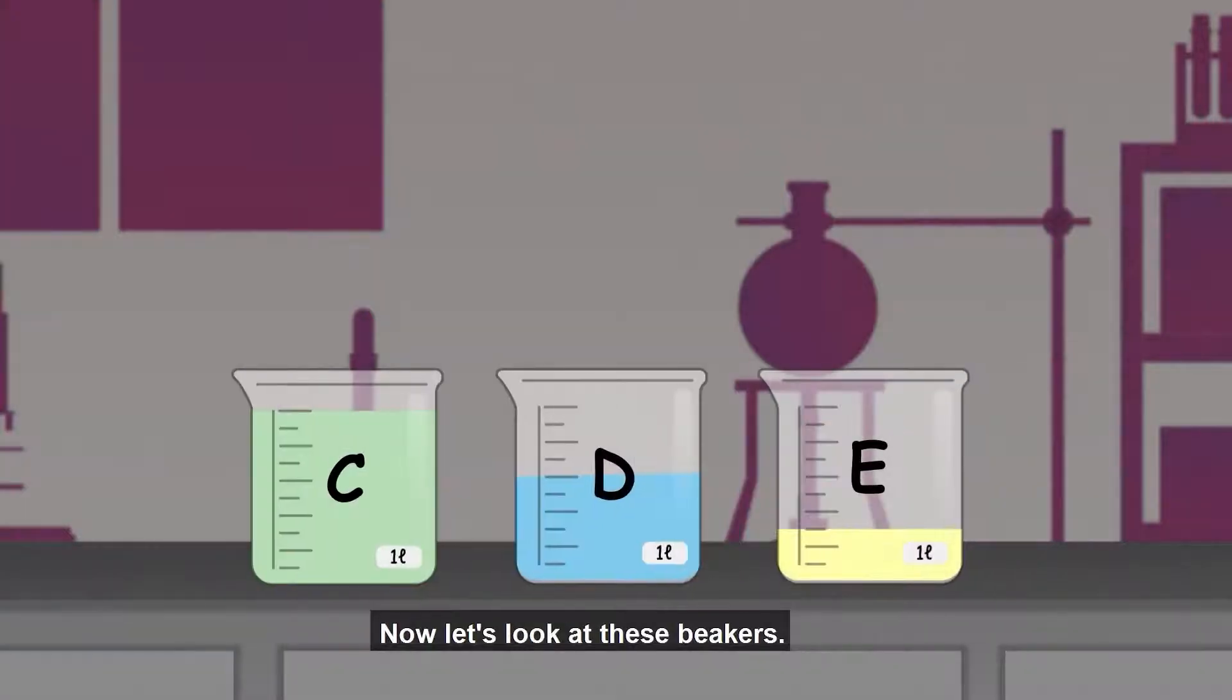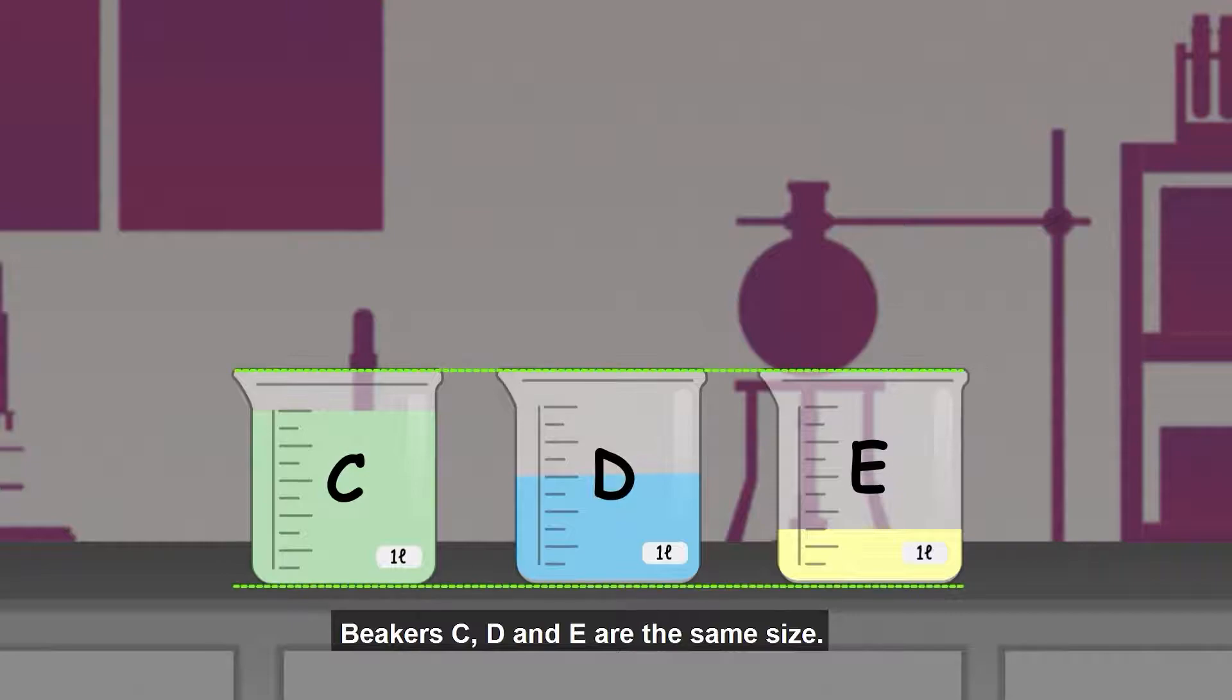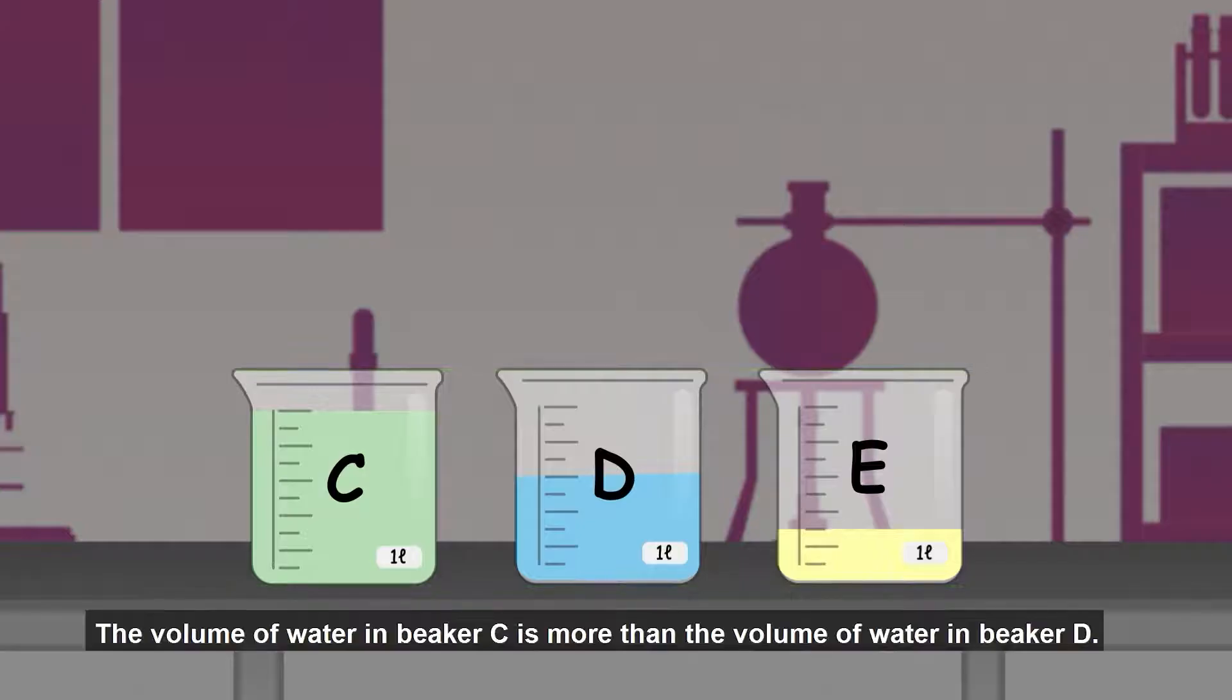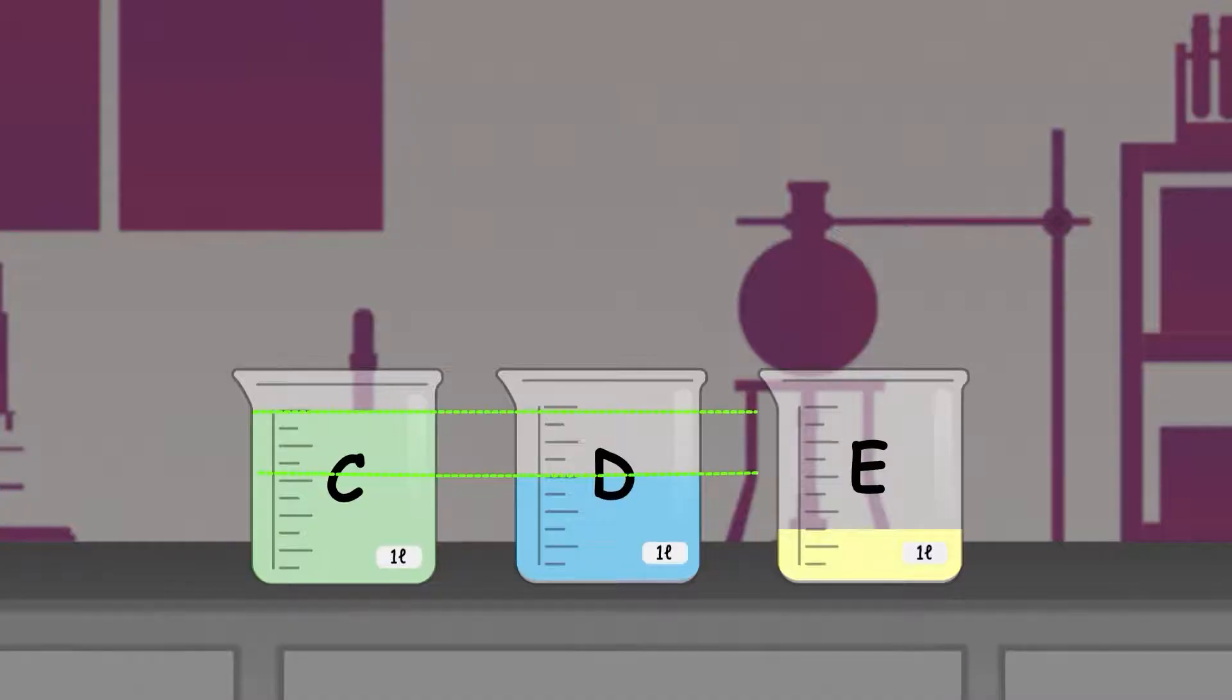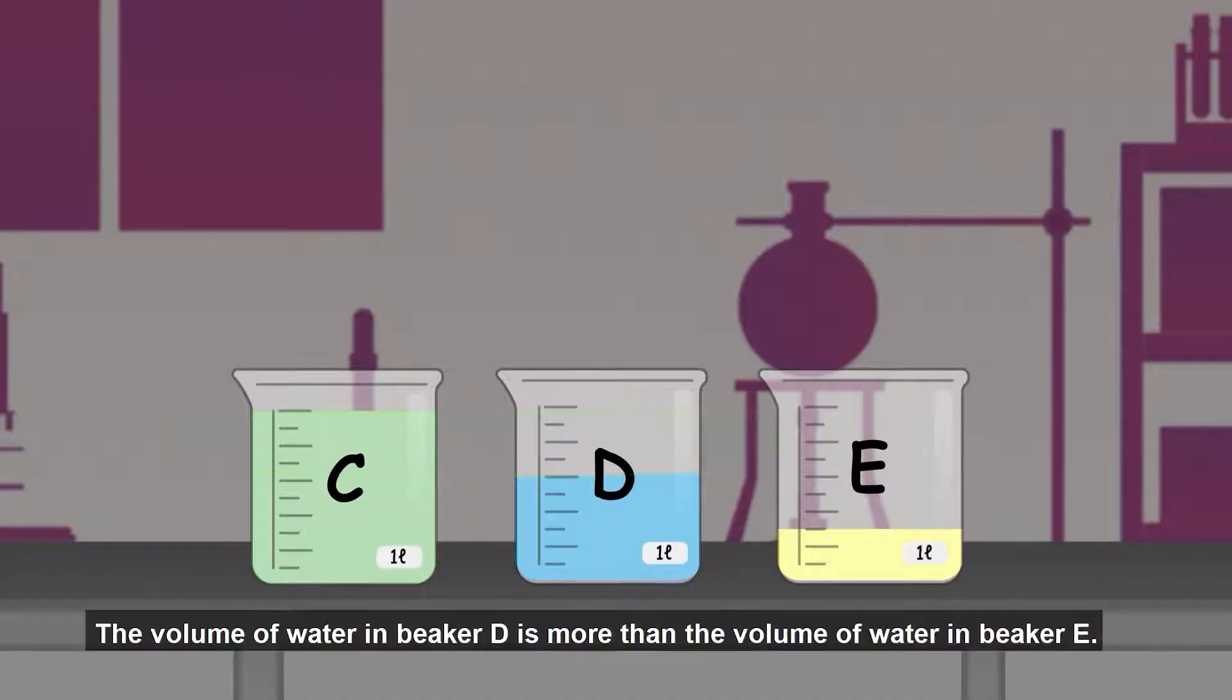Now, let's look at these beakers. Beakers C, D, and E are the same size. The volume of water in beaker C is more than the volume of water in beaker D. The volume of water in beaker D is more than the volume of water in beaker E.